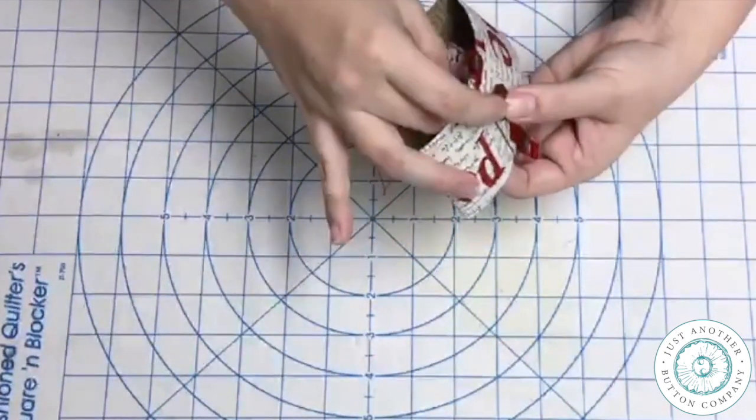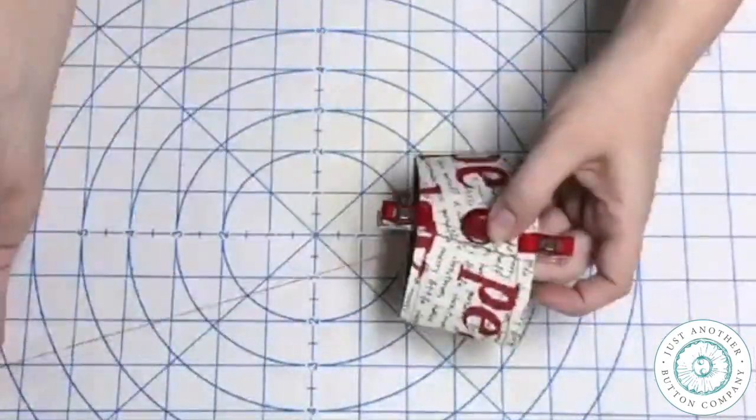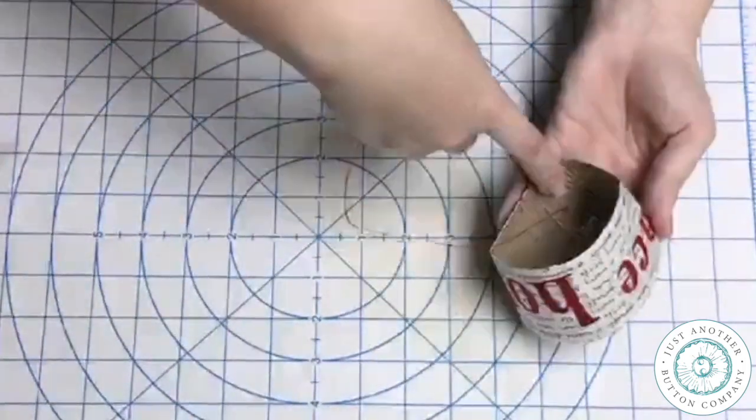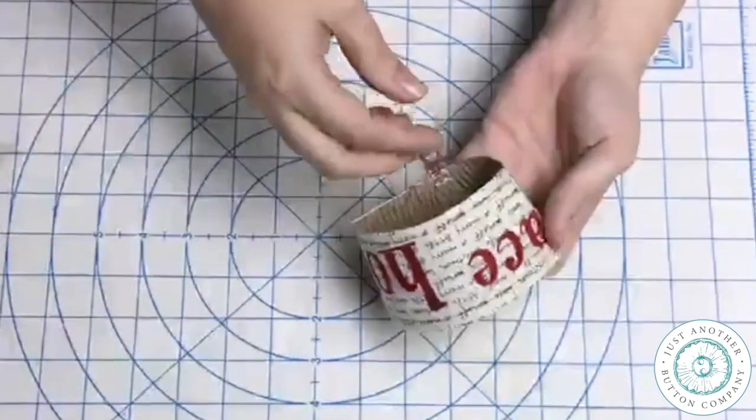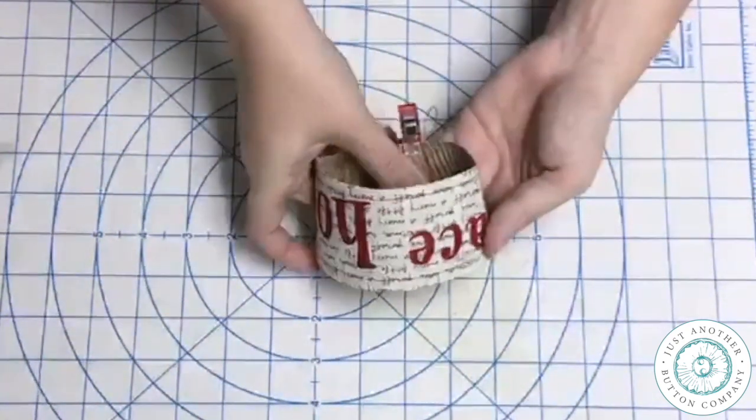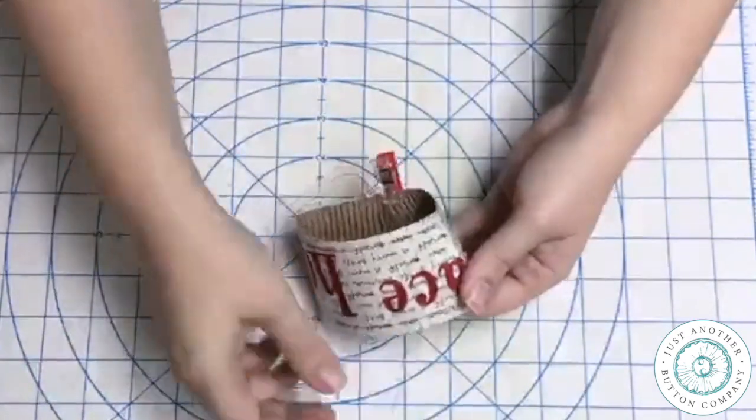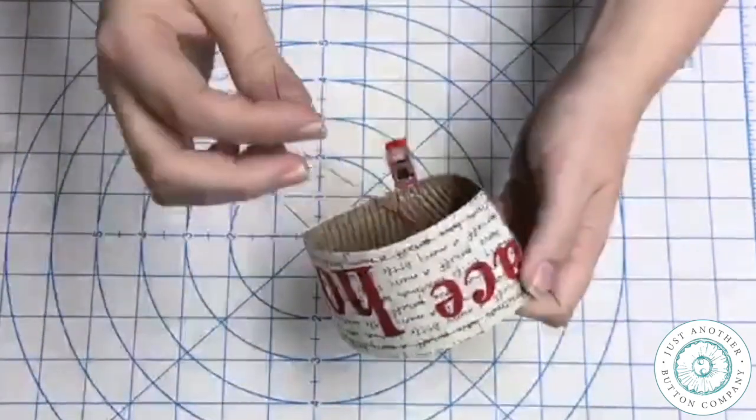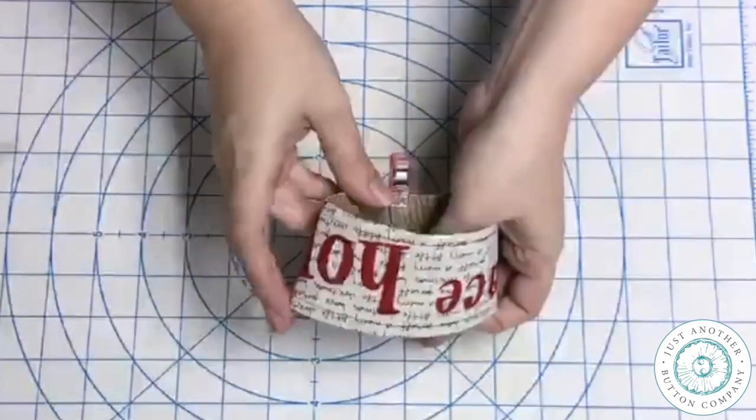I'm going to sew through the button three or four times just to make sure that it's nice and secure. Then when I've got it sewn on there I'm going to look on the inside and I'm going to run my needle under the threads that are running along the back of the button. And that's going to create this loop that I'm going to put my needle through. Sewing through that loop and pulling it tight. And I'm going to do that a couple of times to secure my button on the back side of the cardboard.